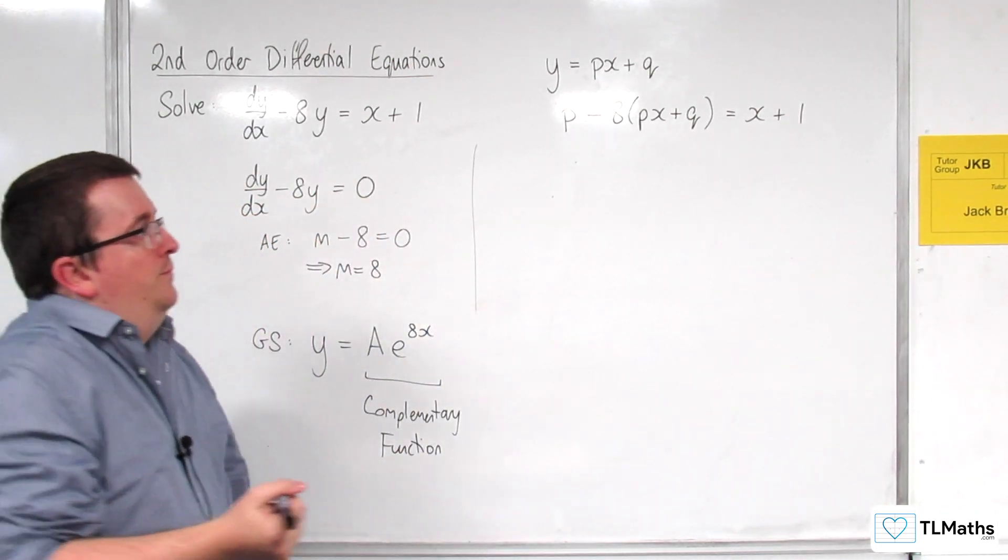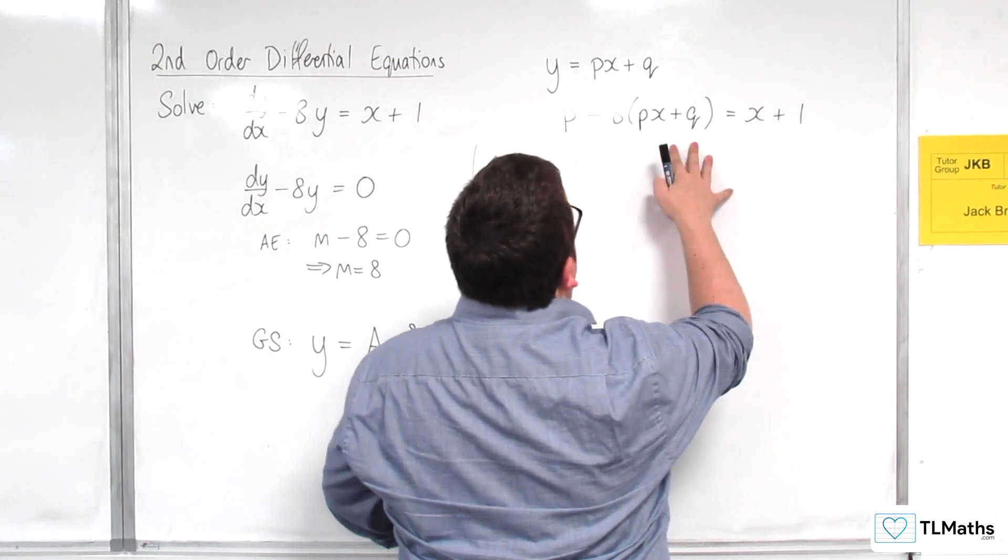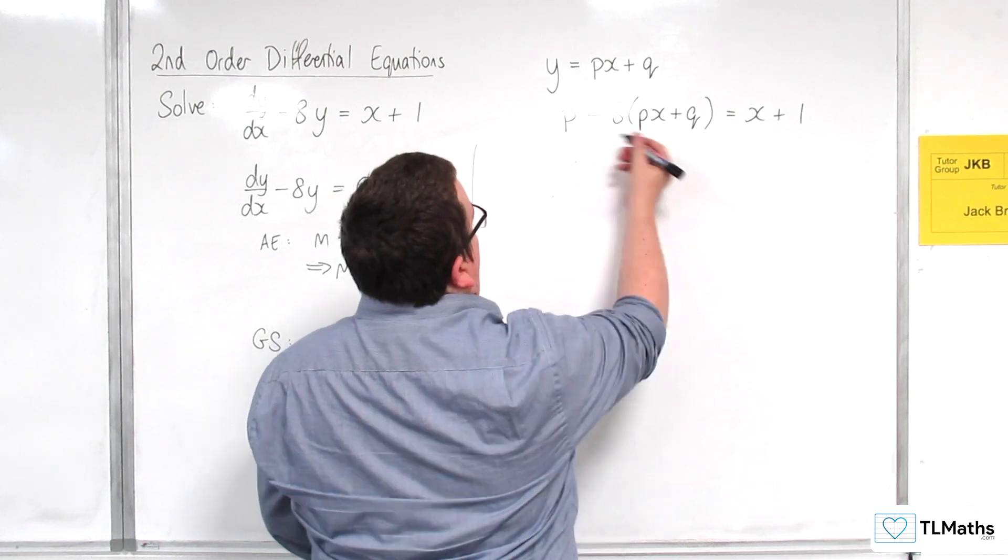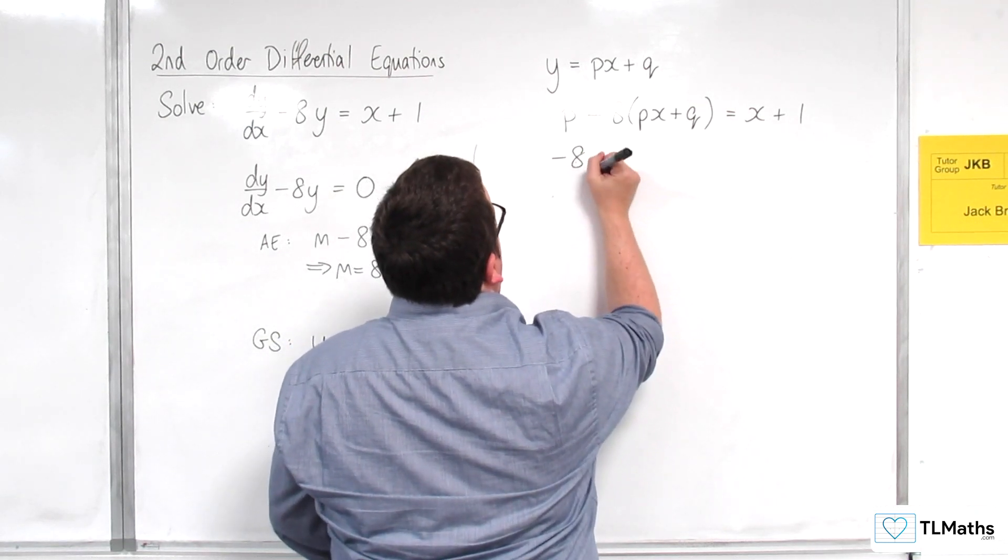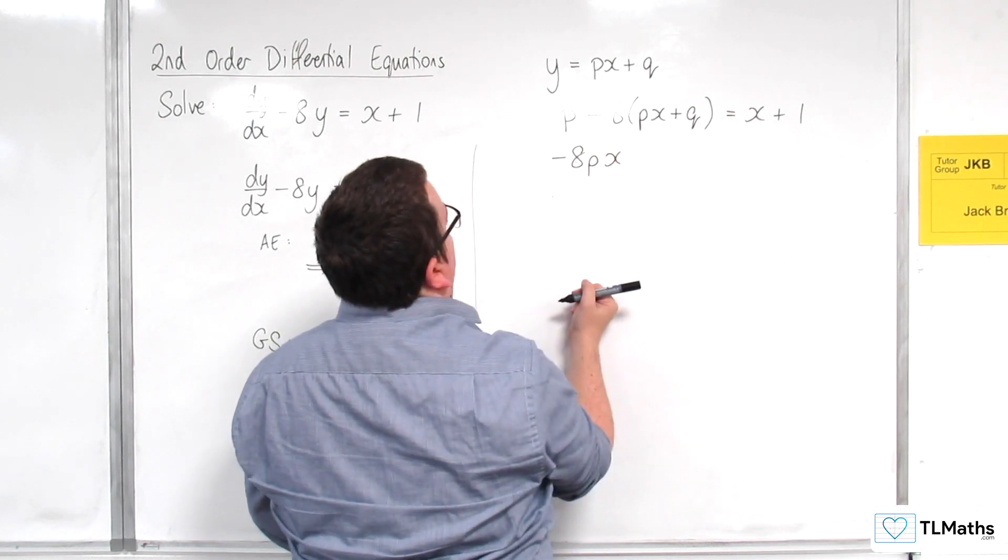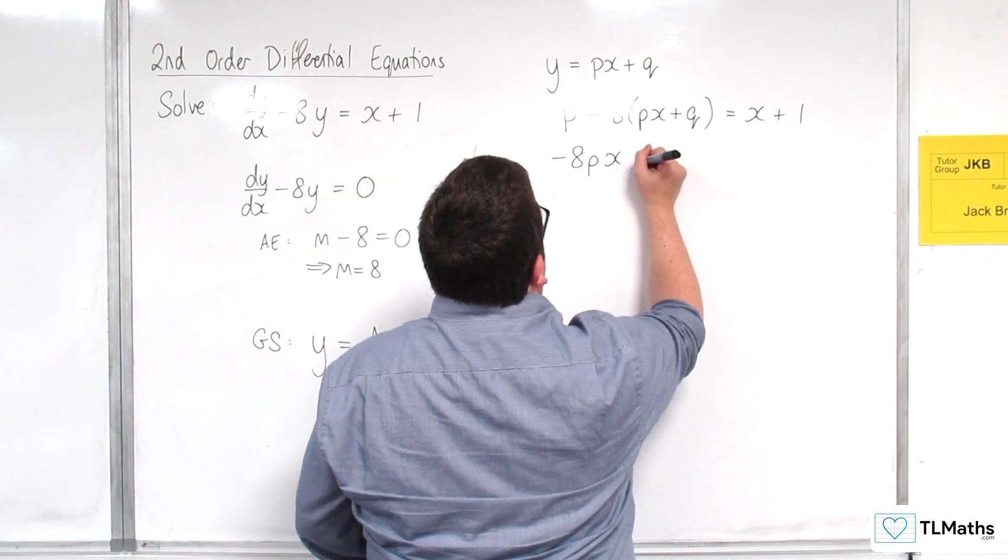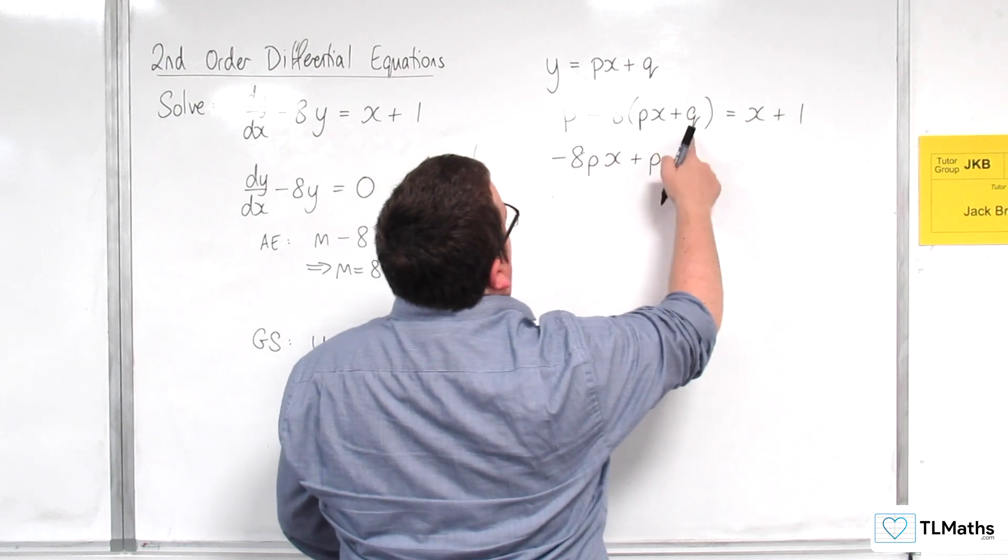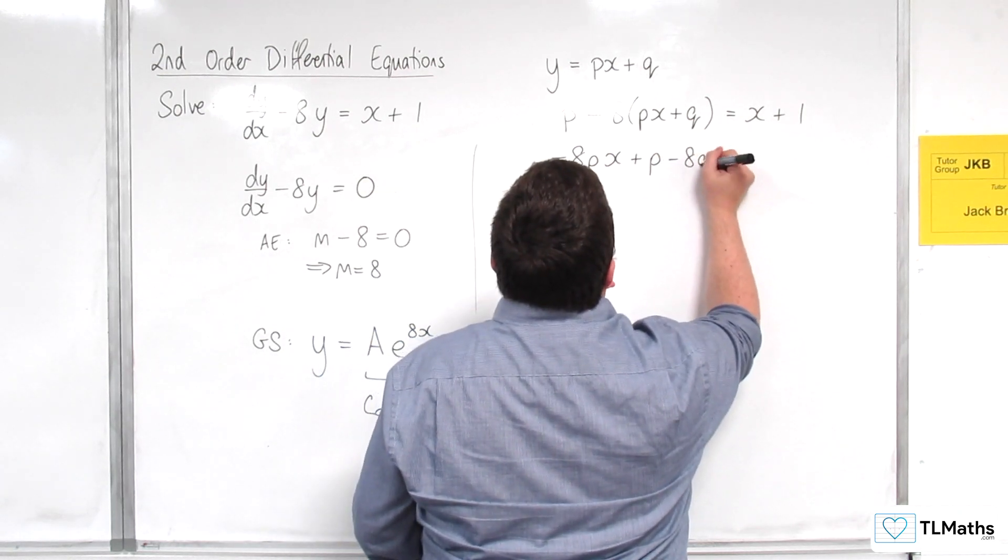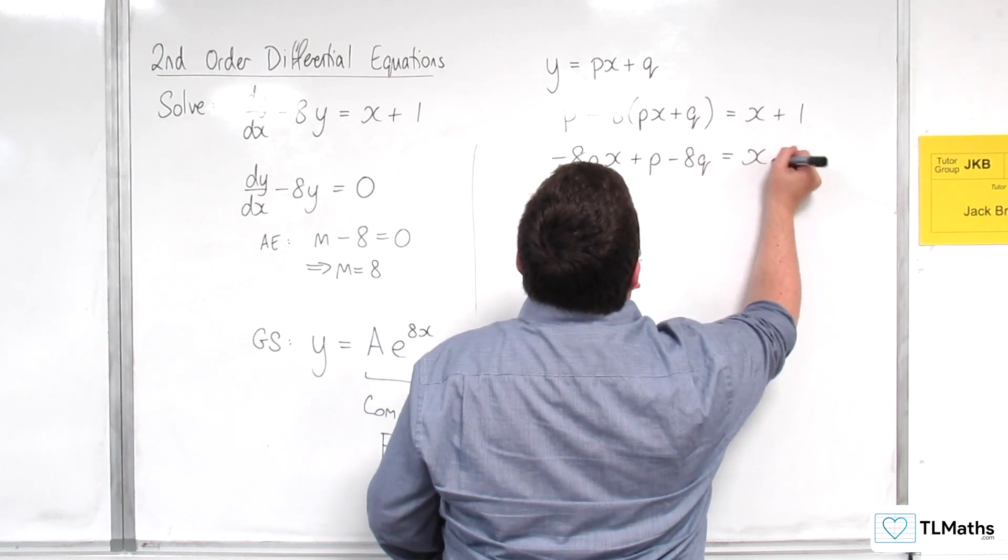Now, so on the left-hand side, what I've got is minus 8px. And I've got p, so plus p, take away 8 lots of q. And that's got to be equal to x plus 1.